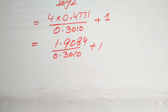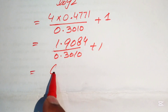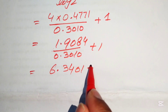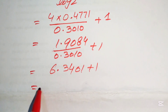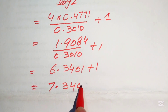Dividing 1.9084 by 0.3010, we get approximately 6.3401. Adding 1, we obtain m equals 7.3401. This is the final value of m.